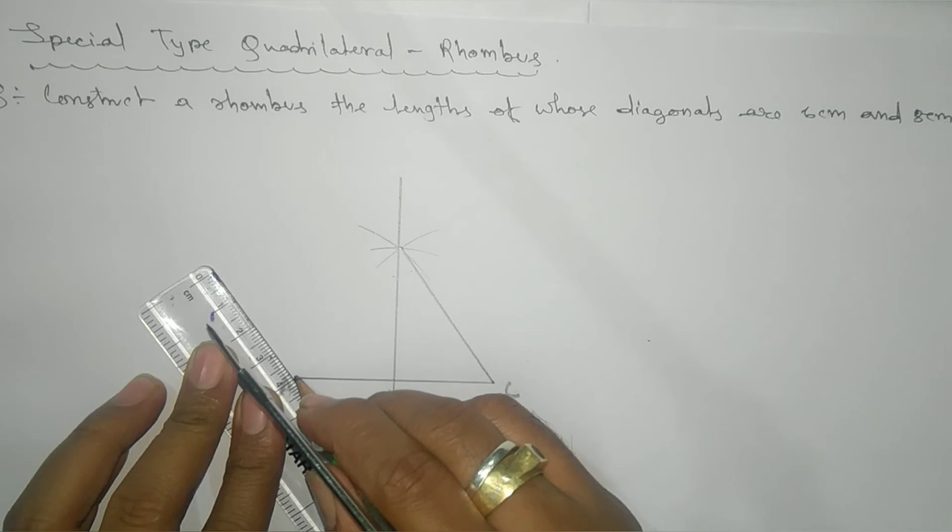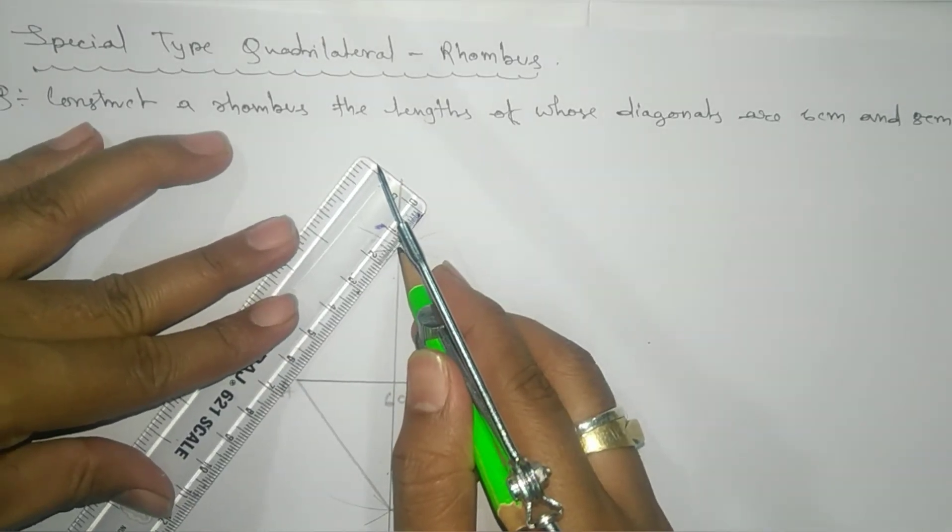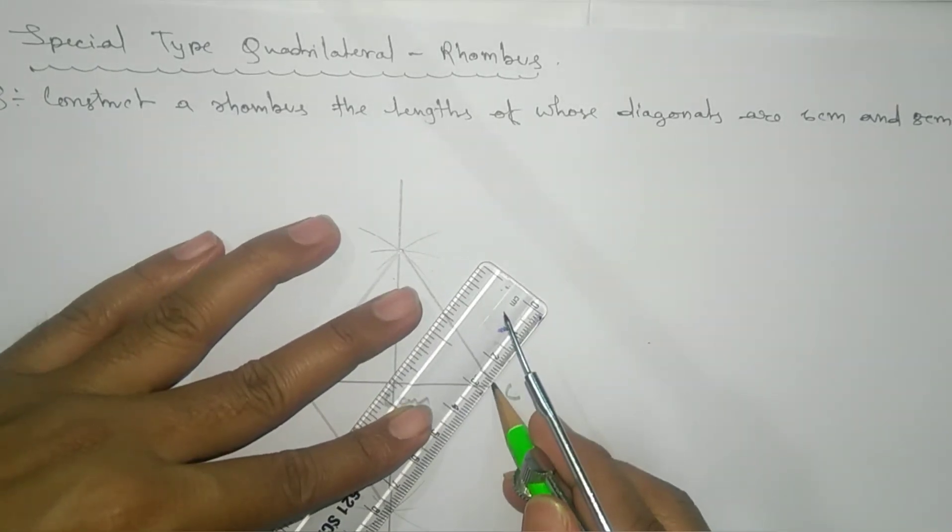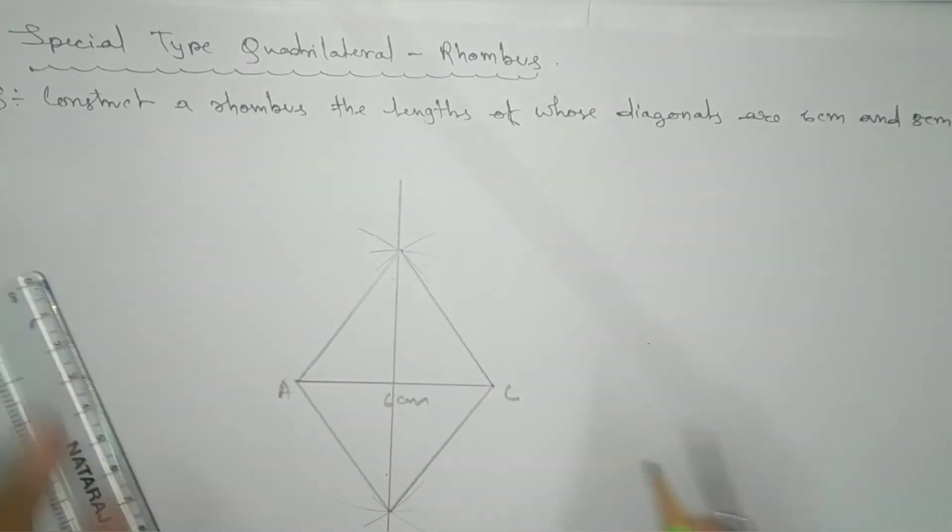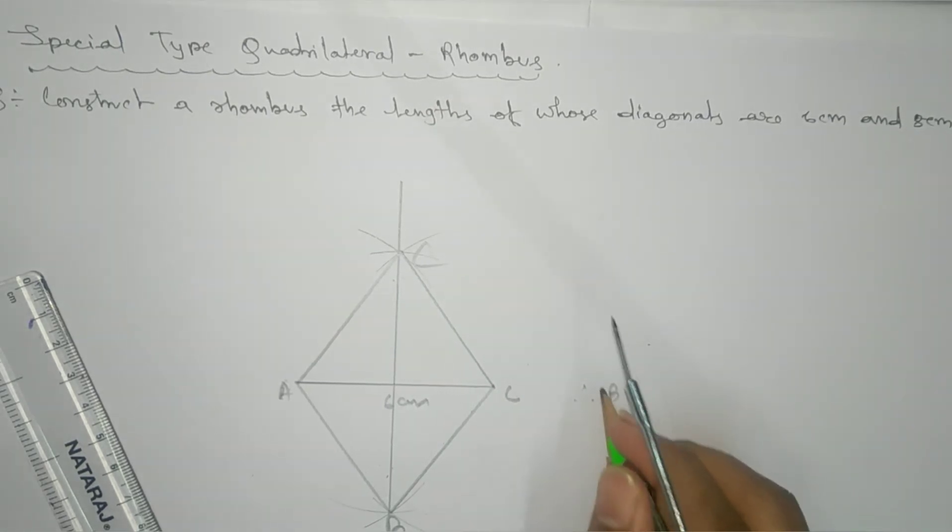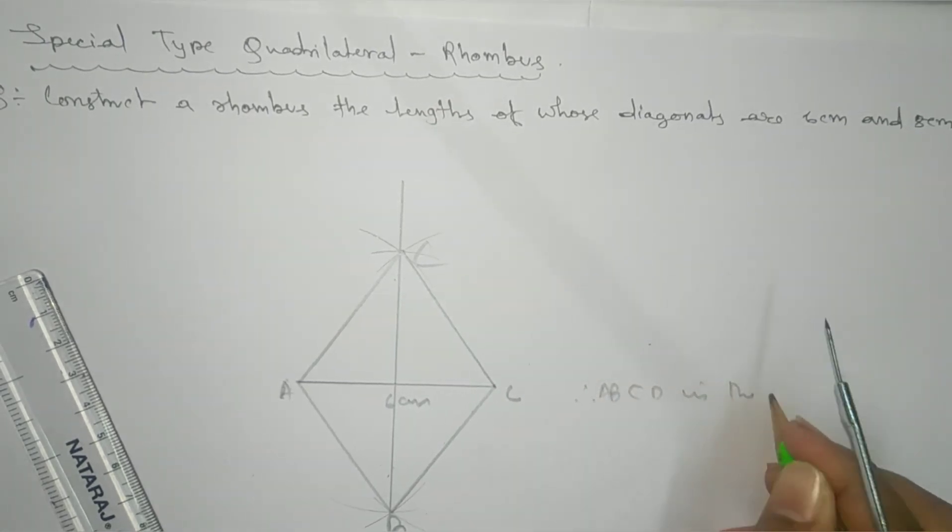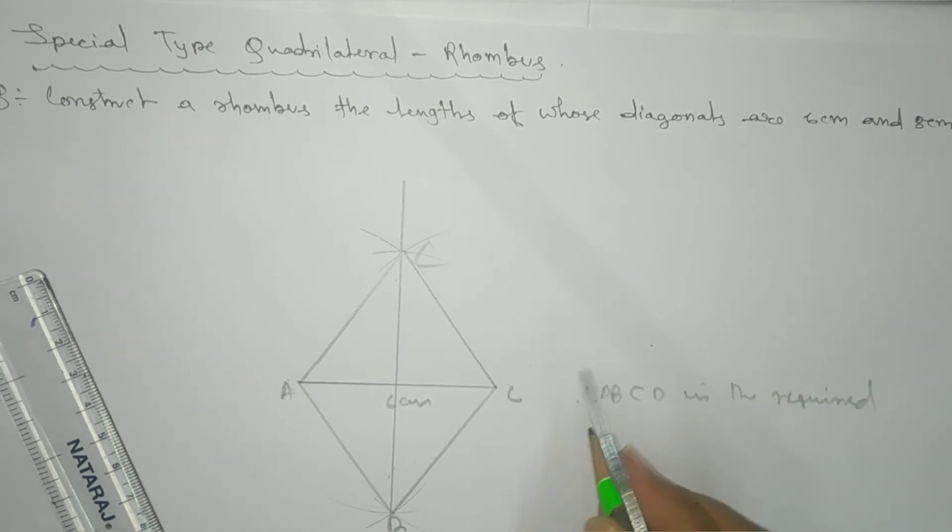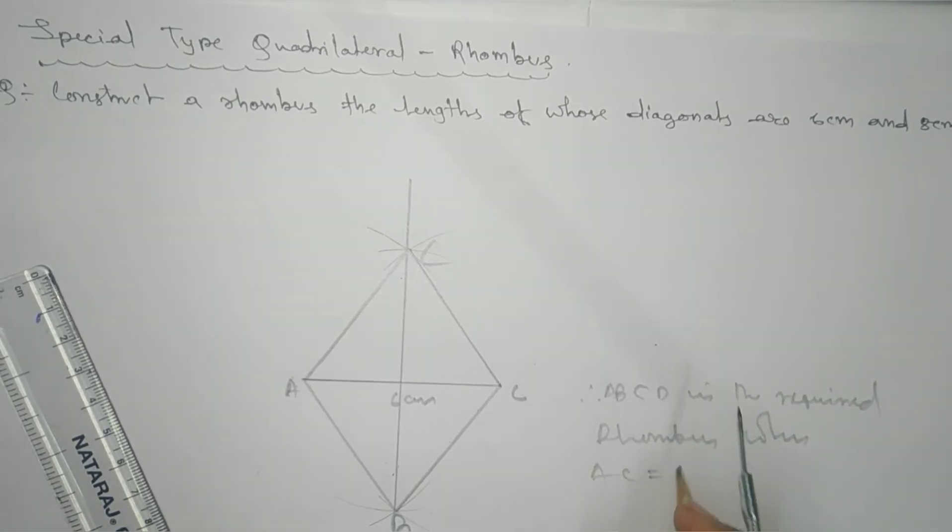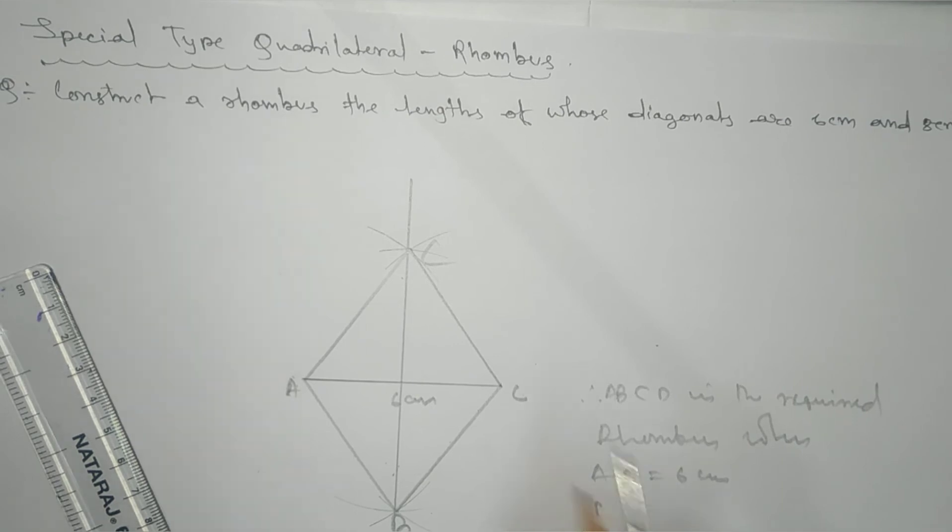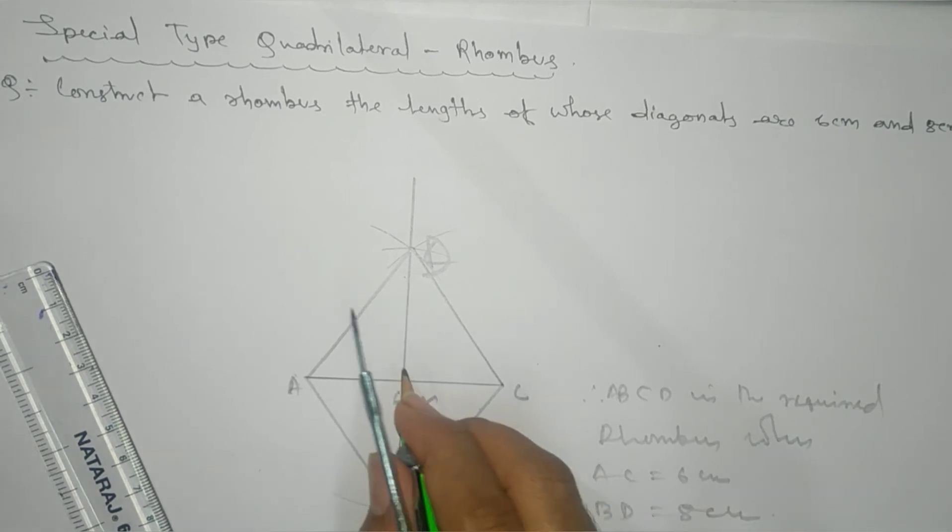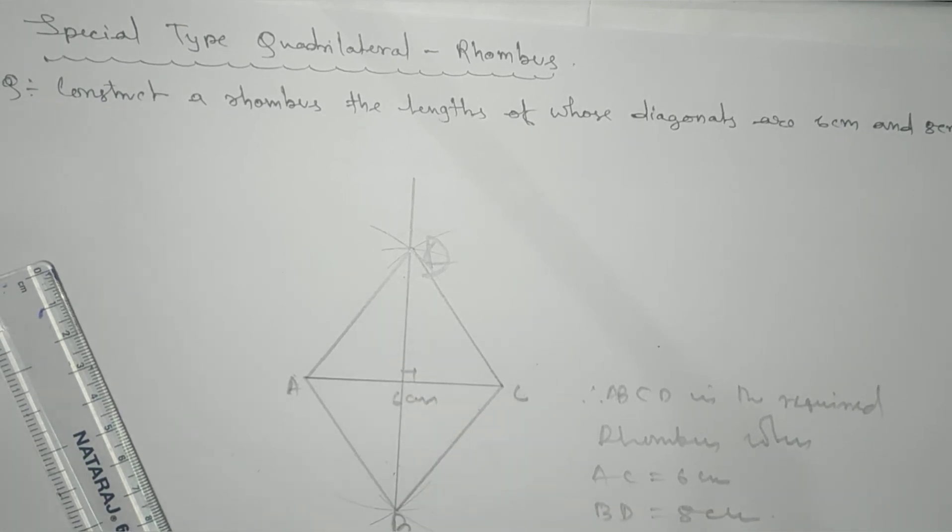The diagonals are 6 centimeter and 8 centimeter. This is your A, B, C, D. Therefore ABCD is the required rhombus where AC equals 6 centimeter and BD equals 8 centimeter. You can put here 90 degrees if you wish. Thank you.